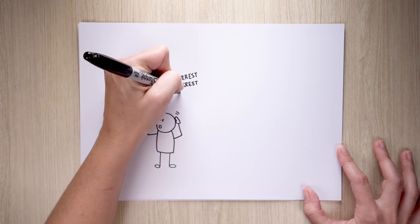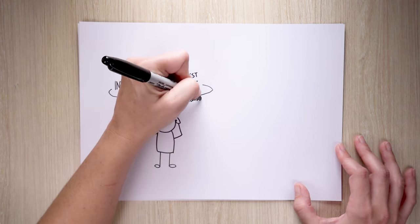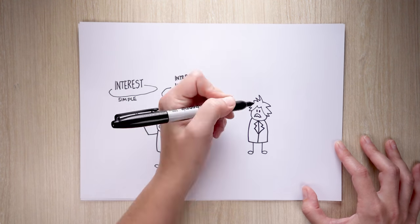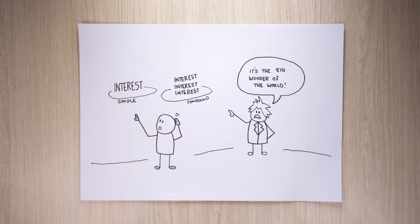Basically, interest usually falls into one of two groups: simple or compound. But what is the difference? And why did Albert Einstein reportedly call compound interest the eighth wonder of the world? Here's a quick crash course.